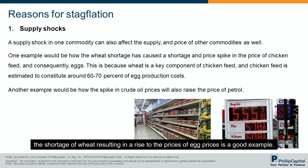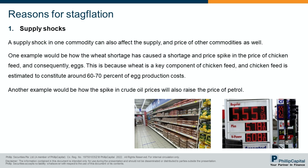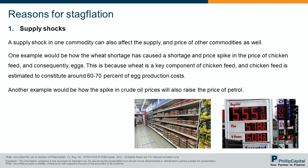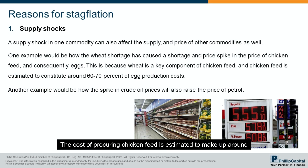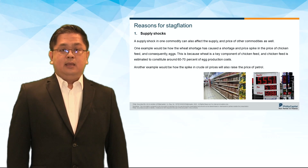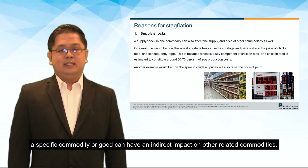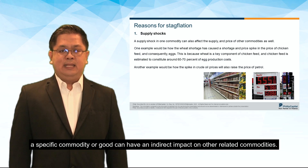The shortage of wheat resulting in a rise to the prices of eggs is a good example. Wheat is a key ingredient in chicken feed, essential to the rearing of chickens, and hence the supply of eggs. The cost of procuring chicken feed is estimated to make up around 60–70% of the cost of production of chicken eggs. Hence, the interconnectedness between different commodities shows that a supply shock directly affecting a specific commodity can have an indirect impact on other related commodities.